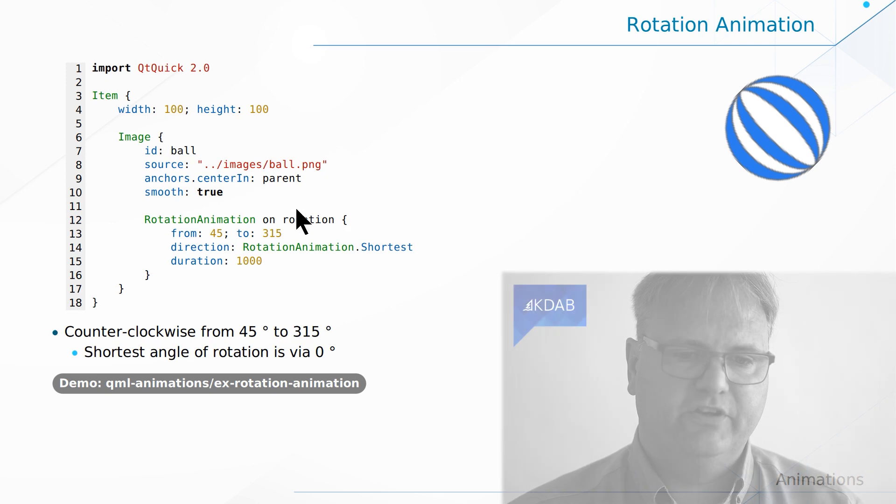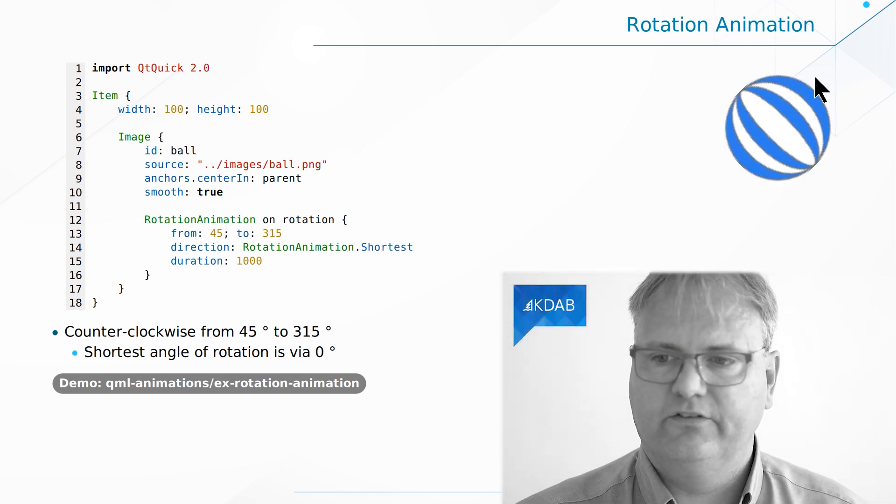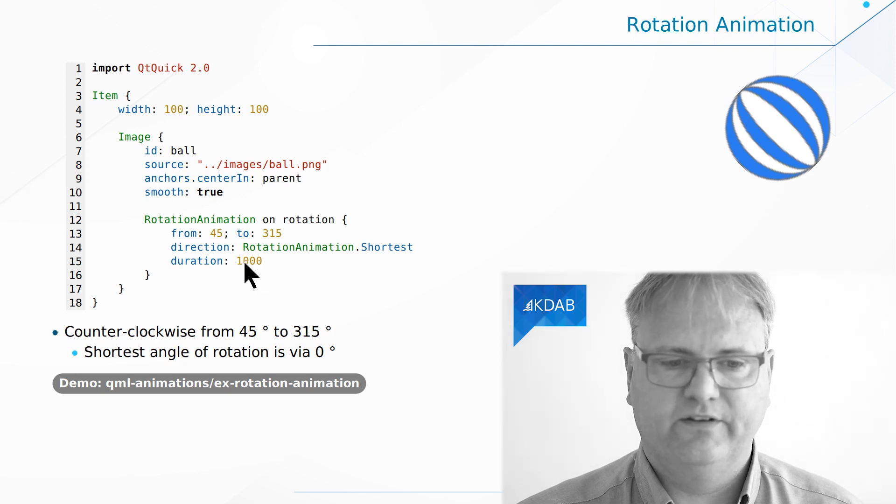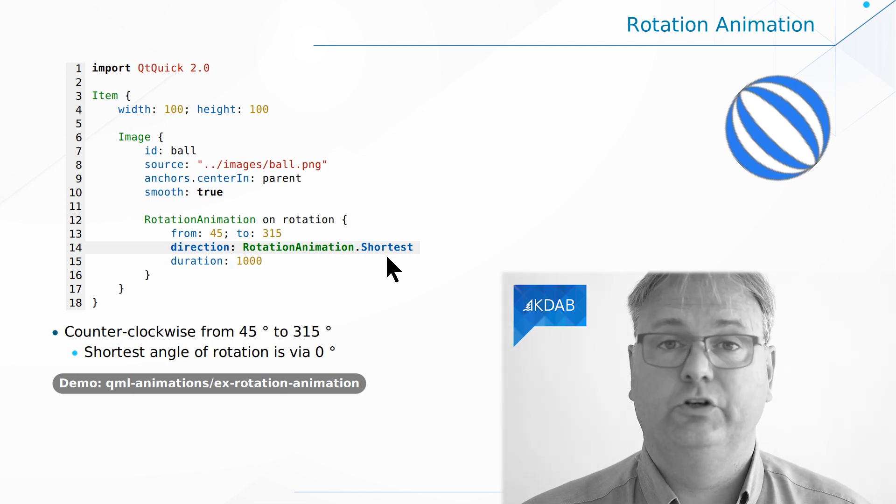Another element built into the language is RotationAnimation. The rotation could have just been a plain NumberAnimation, but there is a special case when we are rotating: for example, from 45 degrees to 350 degrees. I could go 45, 46, 47 up to 315, but it's much easier to go 45, 44, 43 and so on — that's exactly what RotationAnimation brings to the table. When I click, it does the rotation for 1000 milliseconds, and the direction set to RotationAnimation.Shortest is what makes it do exactly that.